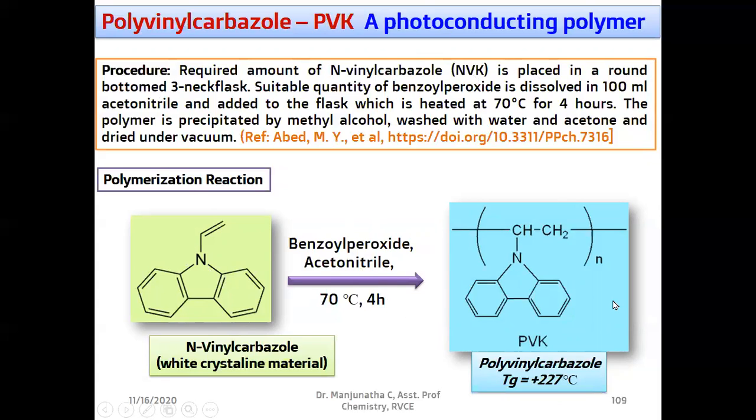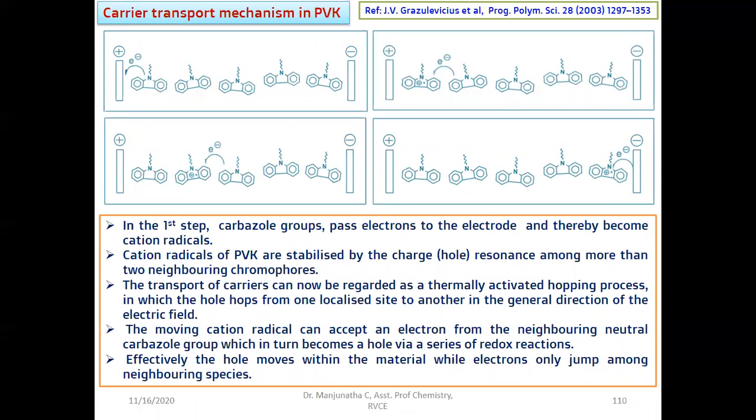After that you get the Polyvinyl Carbazole. Vinyl Carbazole is polymerized into Polyvinyl Carbazole. That product is precipitated by adding methanol, then it is washed with water and acetone and dried under vacuum. It has been found that the glass-transition temperature of Polyvinyl Carbazole is about plus 227 degree centigrade. This is the procedure which is actually reported in this journal. This is a reference for this procedure. Next, let us look at how this material Carbazole conducts electricity when they are exposed to electromagnetic radiation.